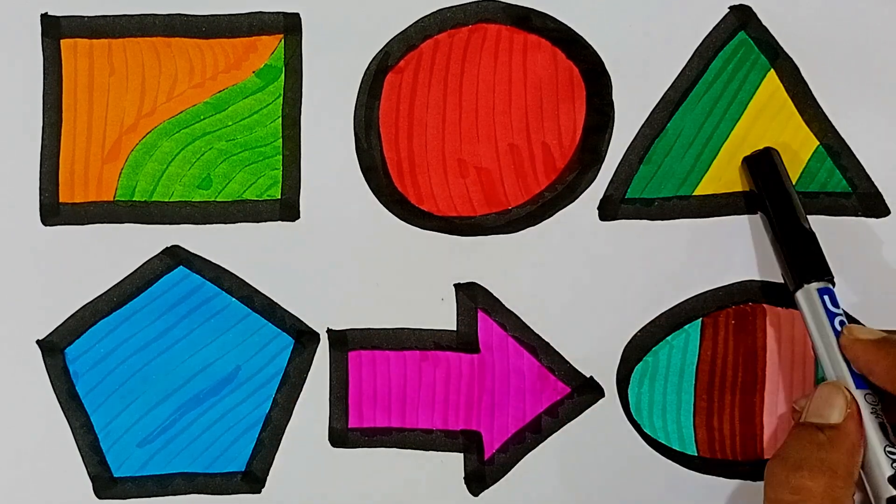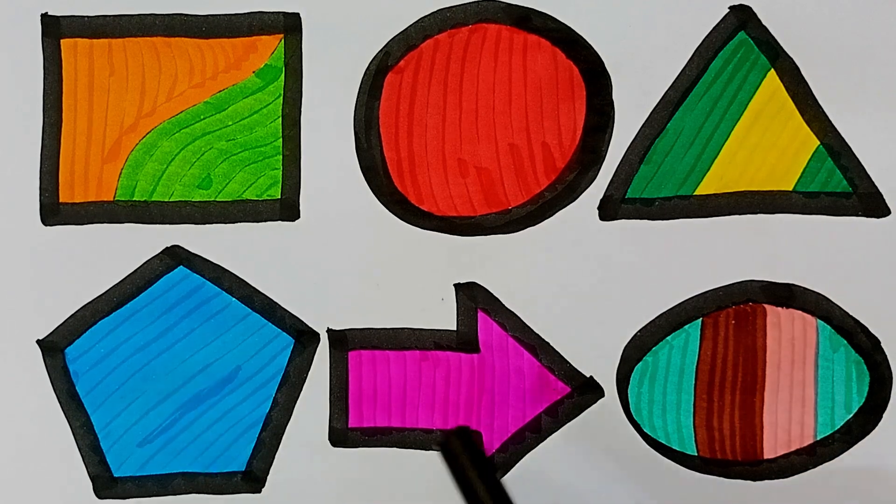Oval. Square, circle, triangle, pentagon, arrow, oval.